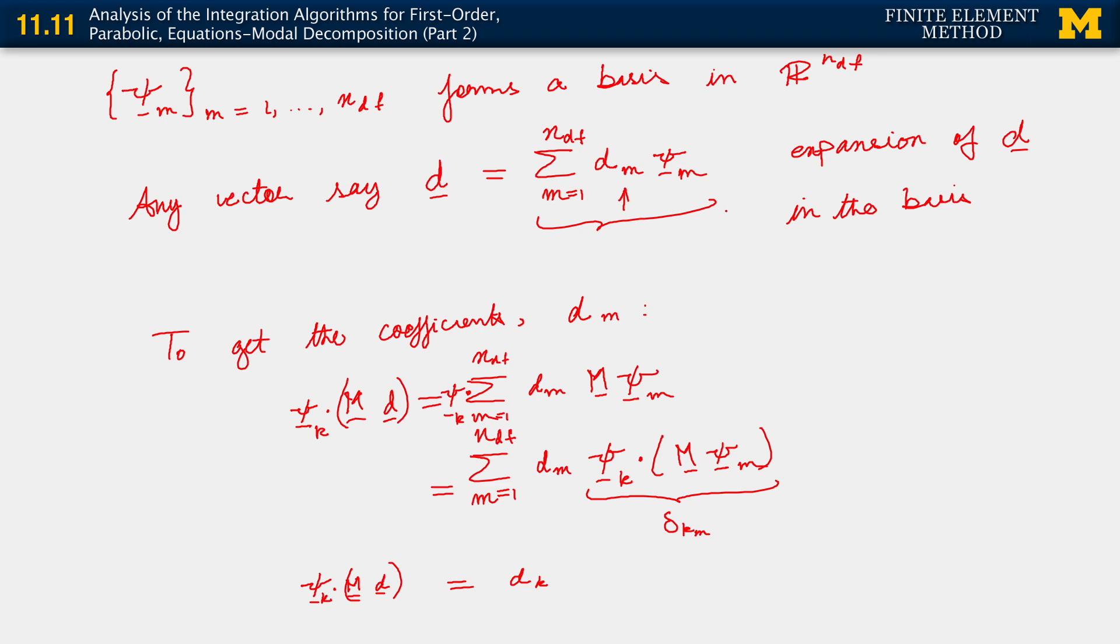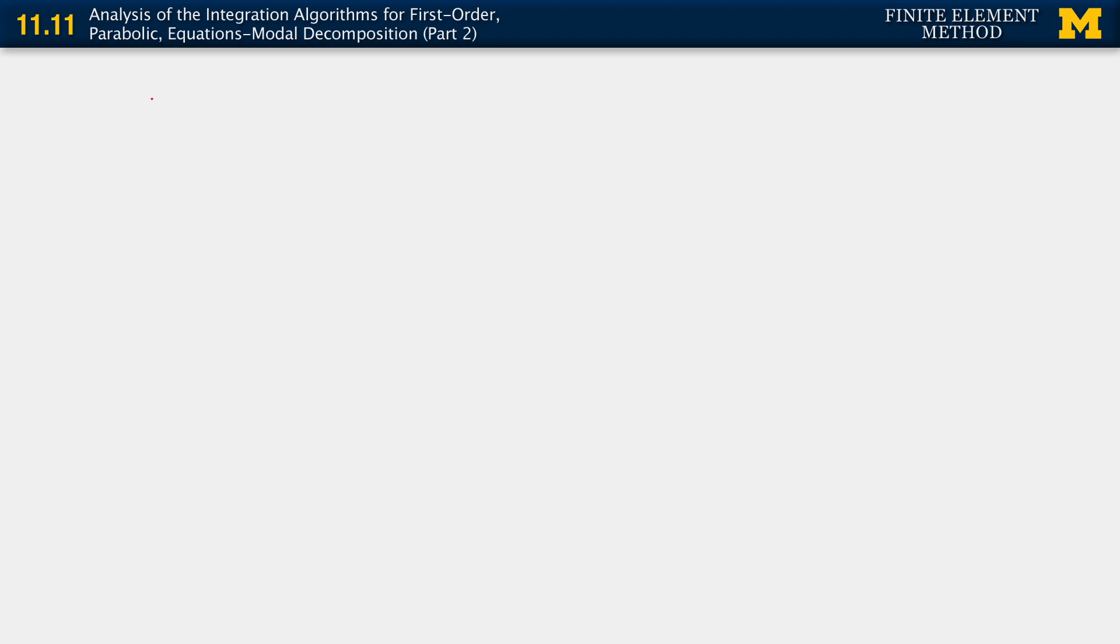Let me just write a few comments about this decomposition. When we say that d can be written as sum over m going from 1 to n d f, d sub m psi sub m, this is what we mean by the modal decomposition of d. Each psi m is what we will call a mode. Psi m is the mth mode. And then d sub m is the corresponding modal coefficient of d.